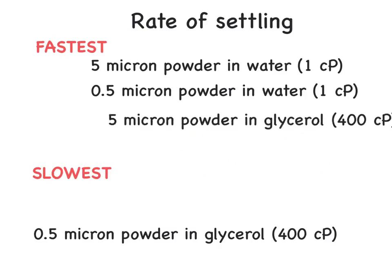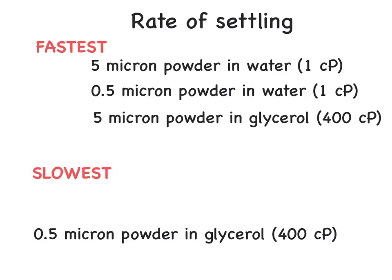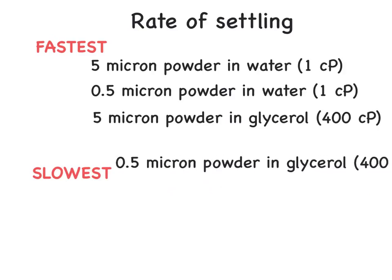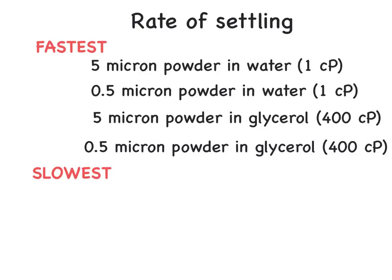Continuing the trend, the third fastest would be the 5 micron particle in glycerol, and the slowest rate of settling would be the smallest particle under the highest viscosity conditions. That wraps up all you need to know about Stokes' Law and how it applies to dispersed systems.